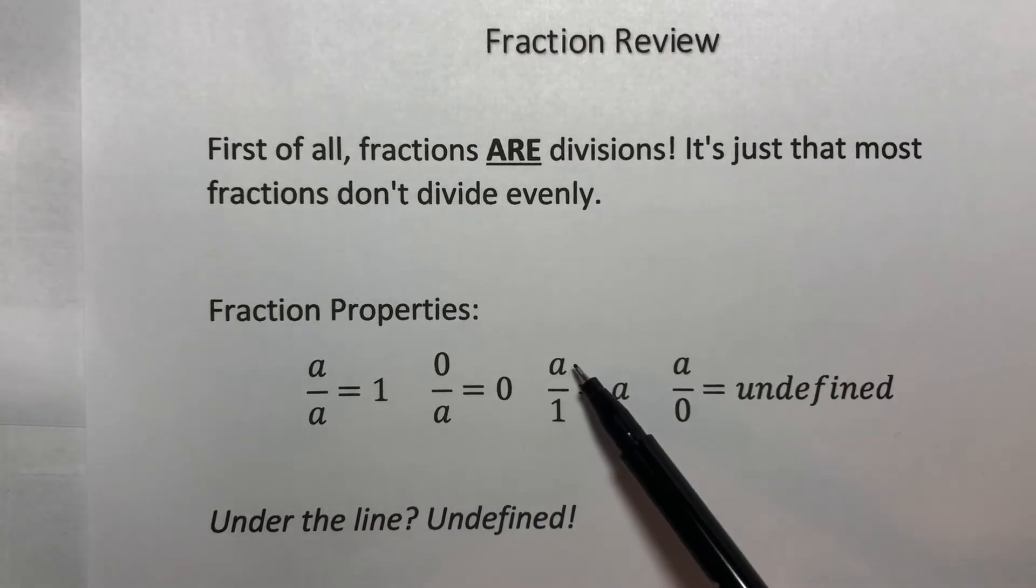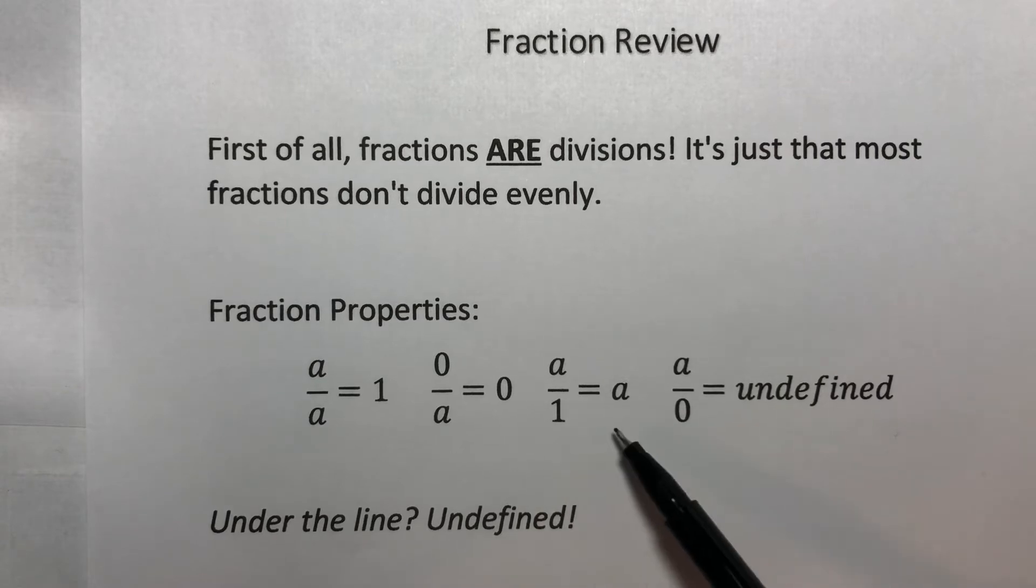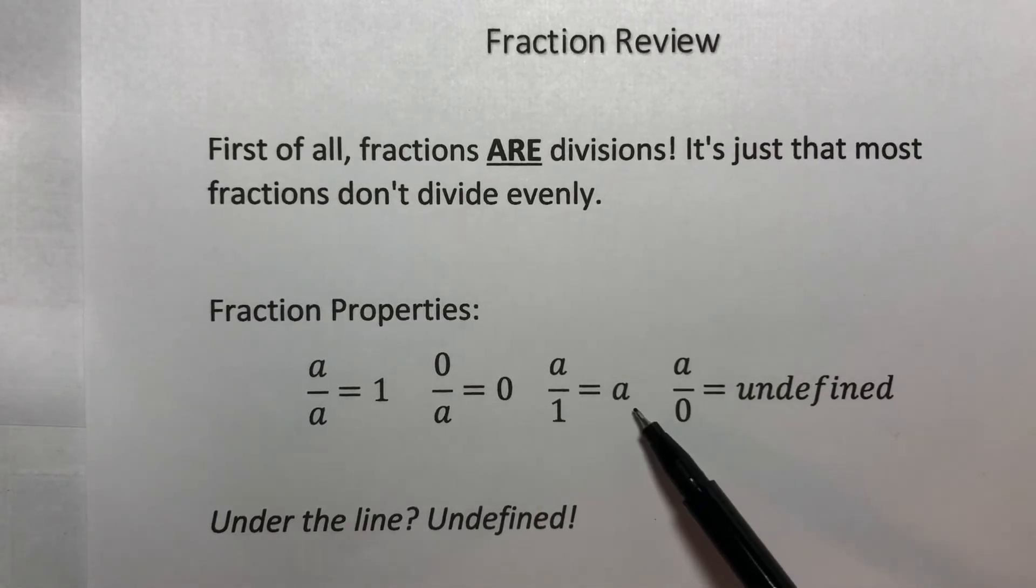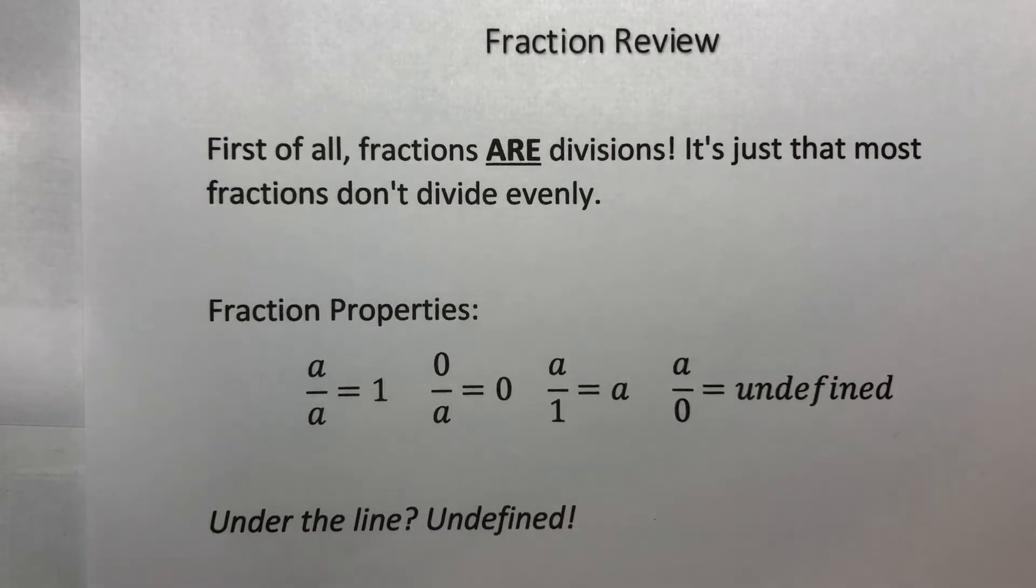This is saying A over one equals A. This is actually pretty important for us later. A number divided by one is always itself. The way we end up using this a lot later is we will have a number and we'll put it over one. So we'll use this in reverse a whole lot.